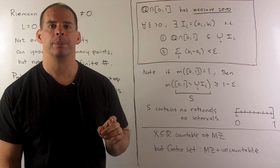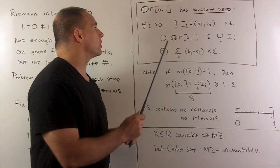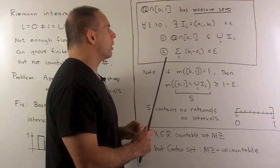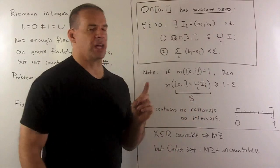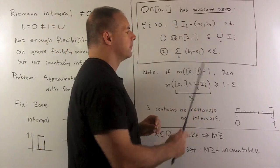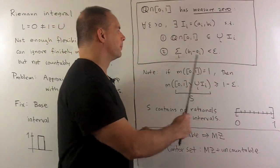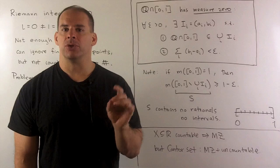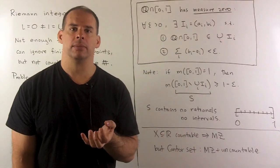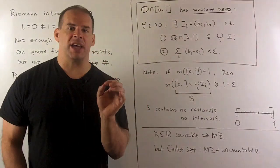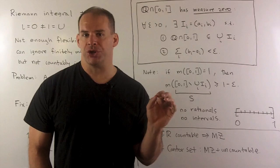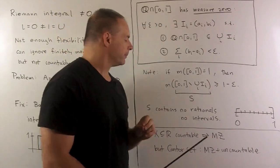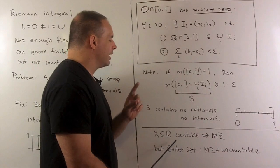We'll save measurable sets for the next video. For here, we return to the set of rational numbers in the closed interval zero one. This set has the property of measure zero: for all epsilon greater than zero, there's a collection of open intervals such that the union of those intervals covers our set, and the sum of the lengths of those intervals is less than epsilon. This means if I have a set of measure zero, we can always find an open cover of our set such that the total length or mass is as small as we like.